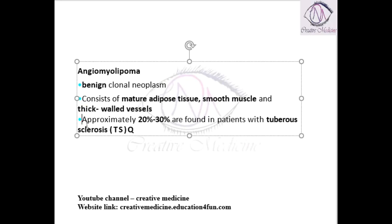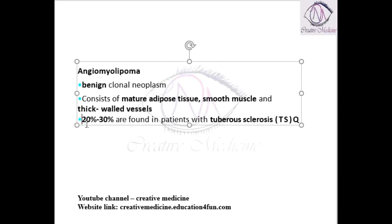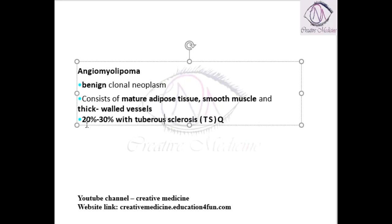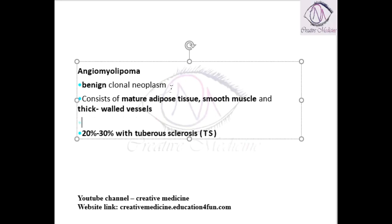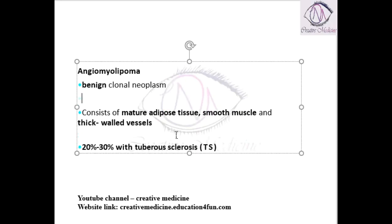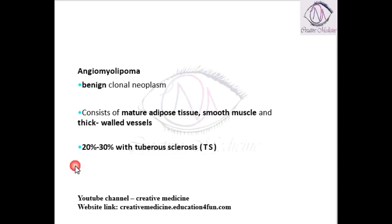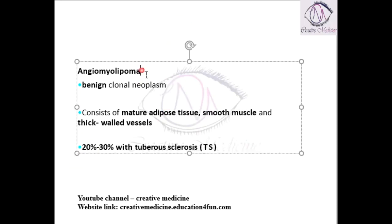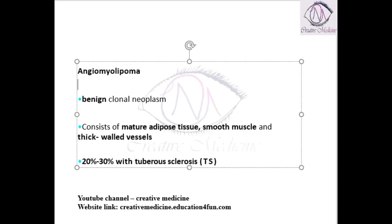Angiomyolipoma is seen in around 20 to 30 percent of patients with tuberous sclerosis. So, angiomyolipoma is associated with tuberous sclerosis.